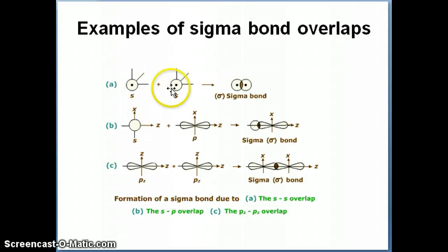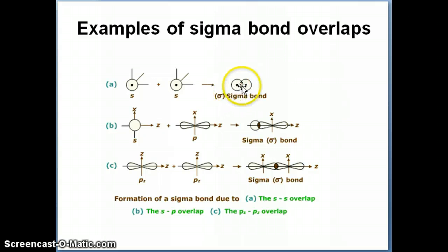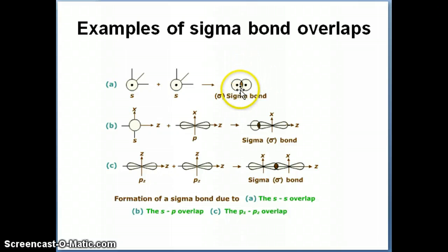Let me show you examples of what sigma bonds look like. A sigma bond is a bond where, when the overlap is formed, that overlap is symmetric around the bond axis. For example, a 1s–1s overlap — an s–s overlap, whether it's 1s-1s, 2s-2s, 3s-3s, etc. — always forms a sigma bond. Because the s orbitals are spherical, the area of overlap would be symmetric around the bond axis; the top part of the overlap is exactly identical to the bottom part.